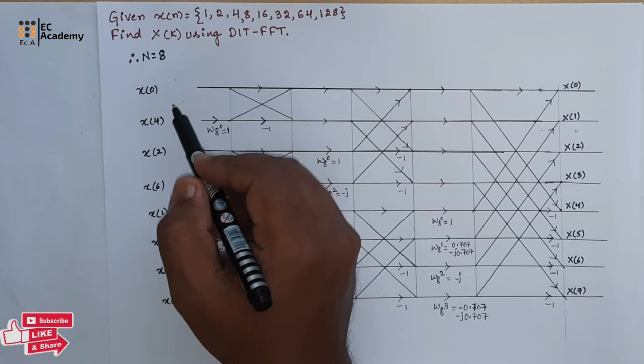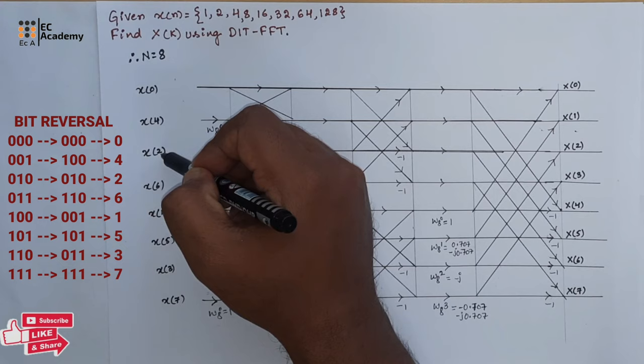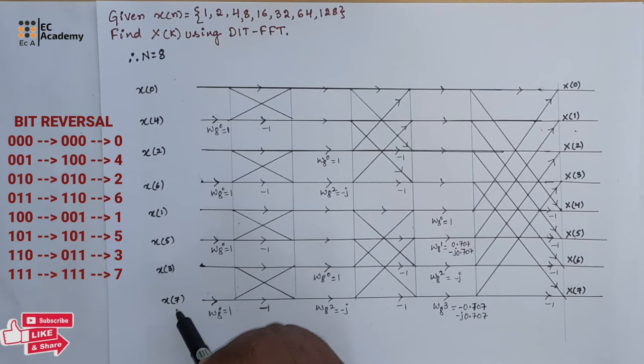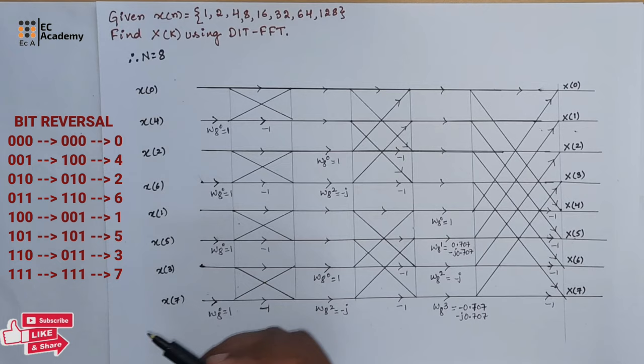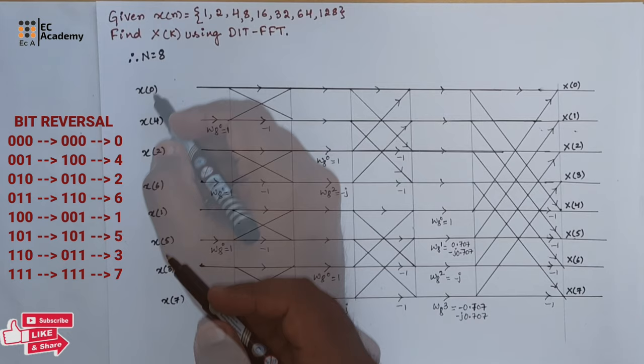The input is written as x of 0, x of 4, x of 2, x of 6, x of 1, x of 5, x of 3, and x of 7. This order can be remembered or derived using the process of bit reversal, which was covered in our previous lecture.